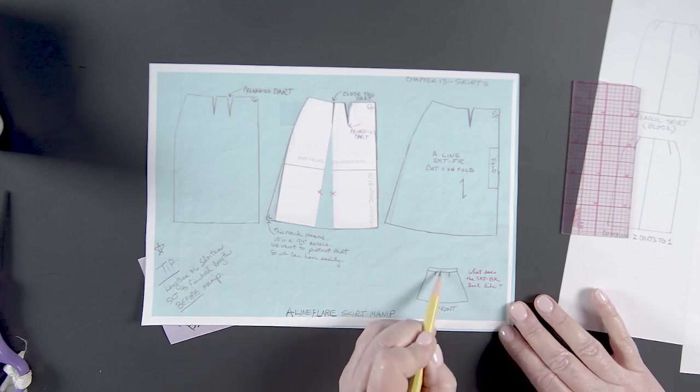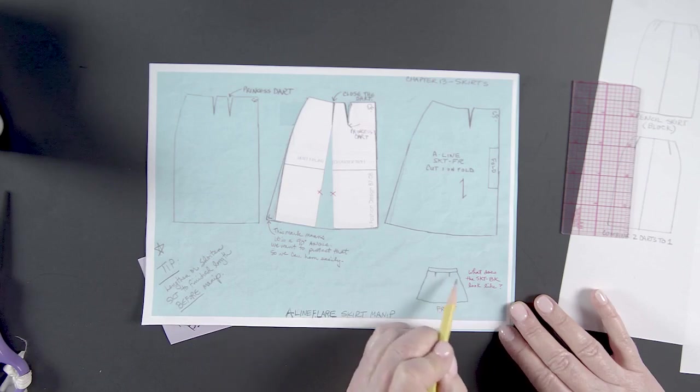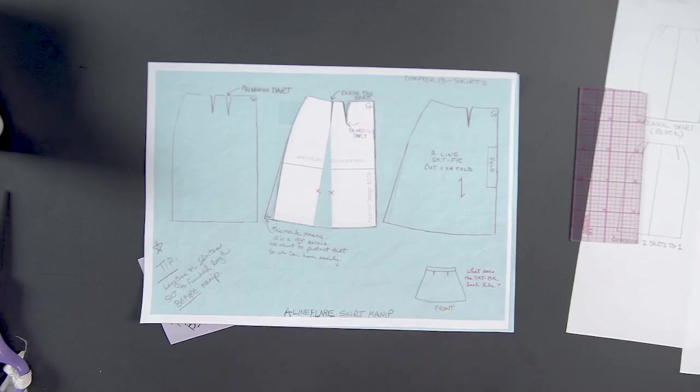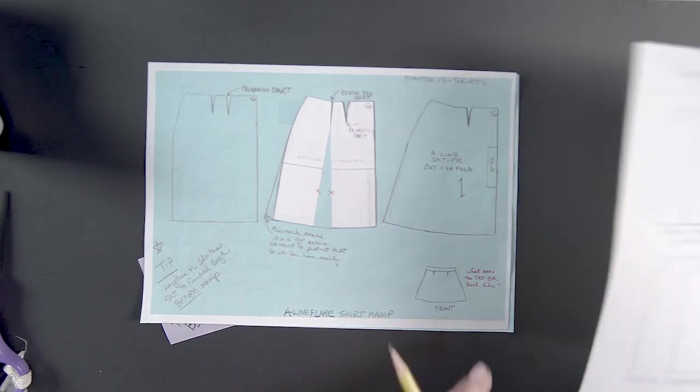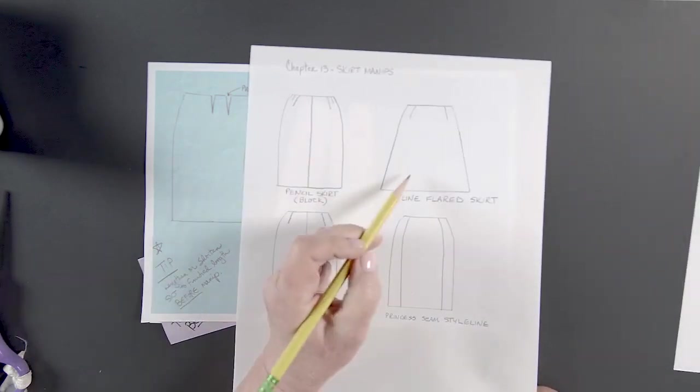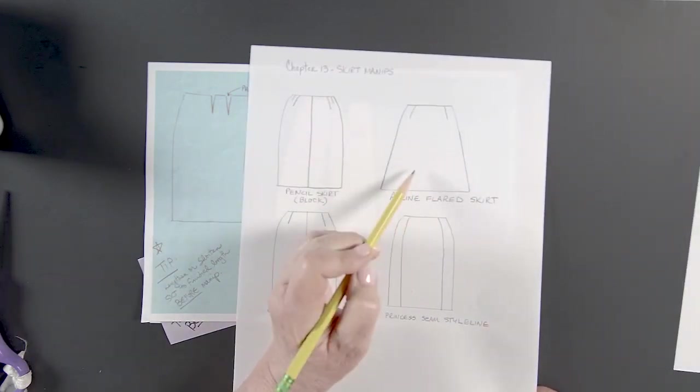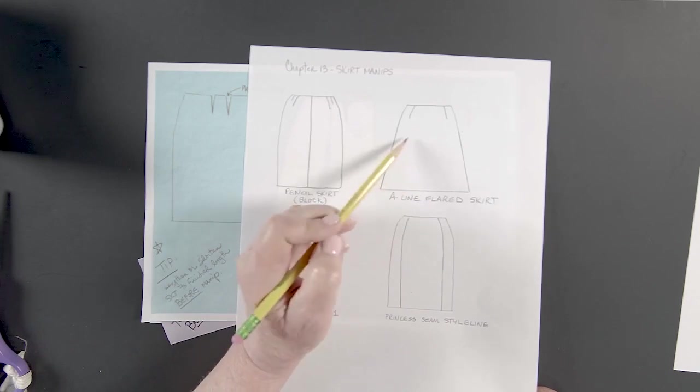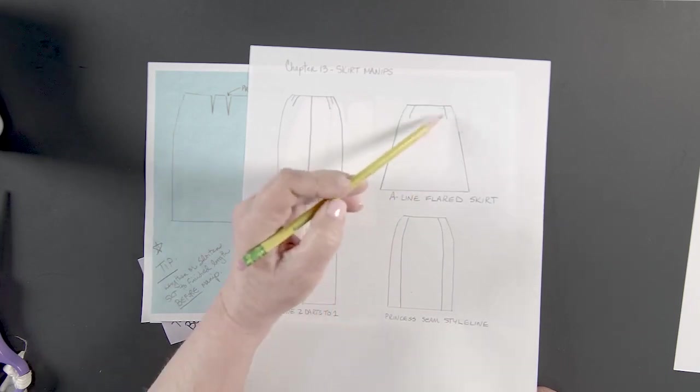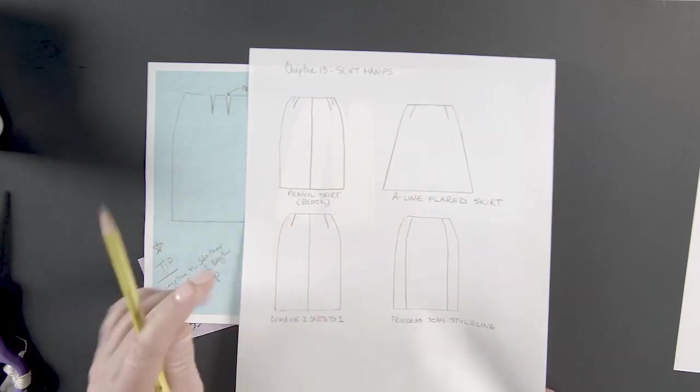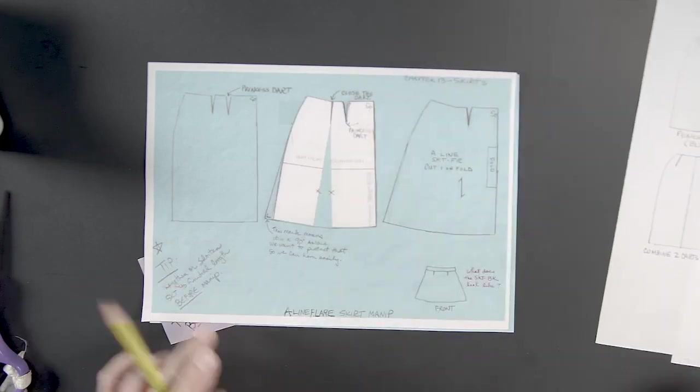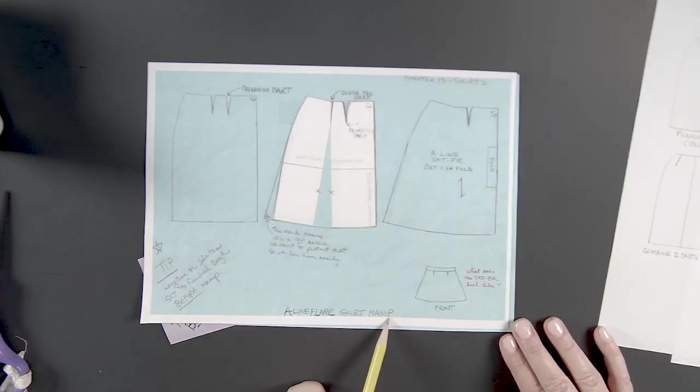This here, the waist band is added, but you don't have to have that on there as long as your technical flat looks like this, where there's no center front seam and you have princess darts here and a flared hemline. And then mark it A-line flare skirt manipulation.